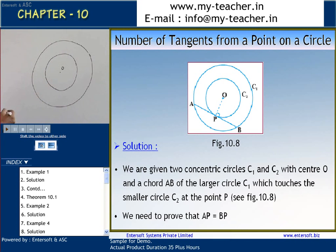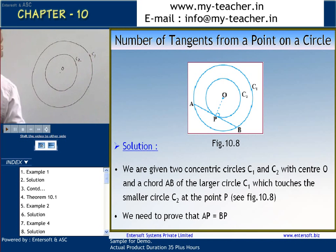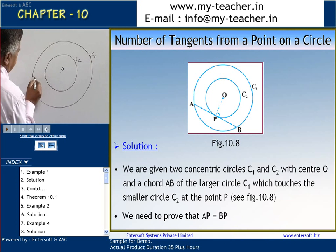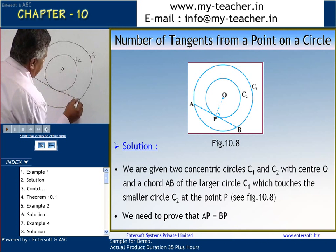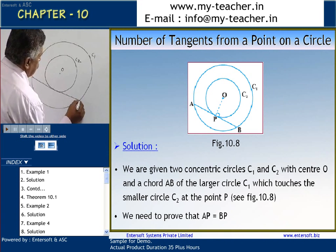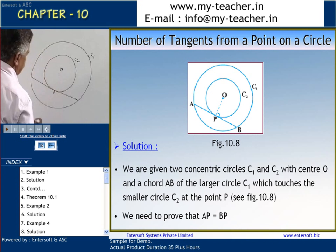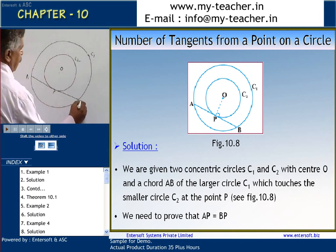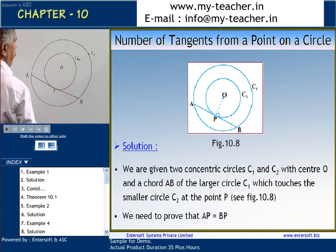Let us draw a chord. Let me call this circle C1 and circle C2, and let me draw a chord AB touching C2 at some point P. This is a chord AB which is touching circle C2 at point P.